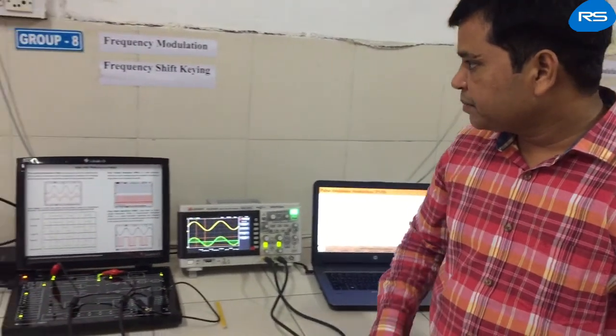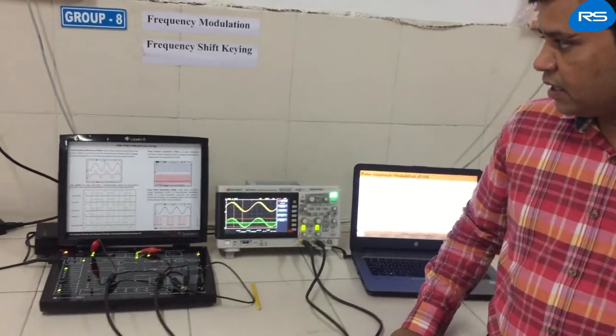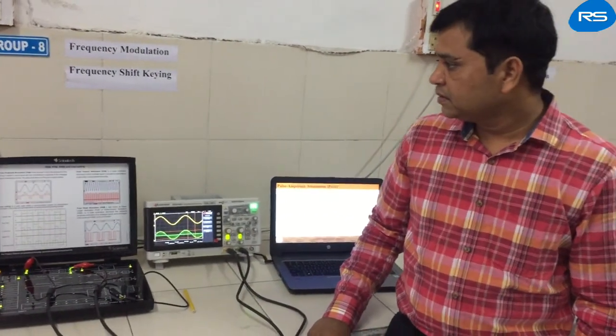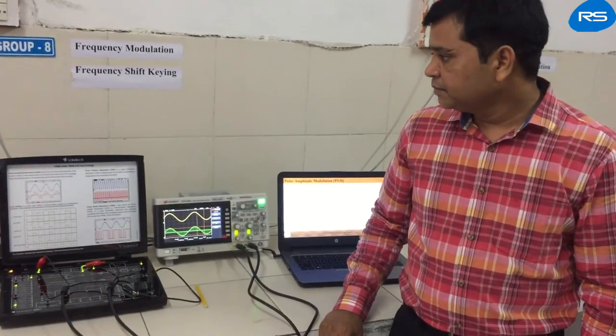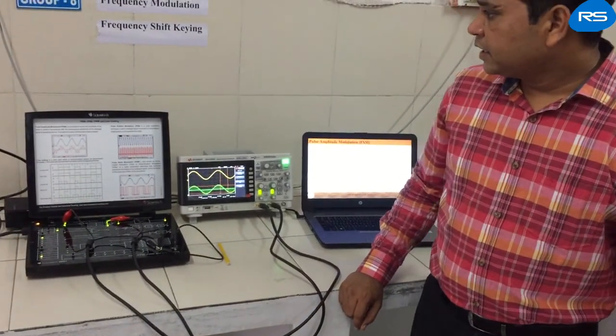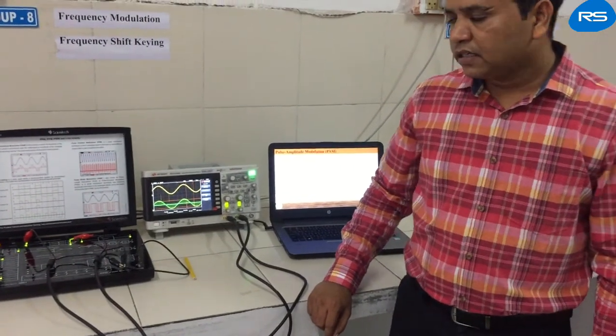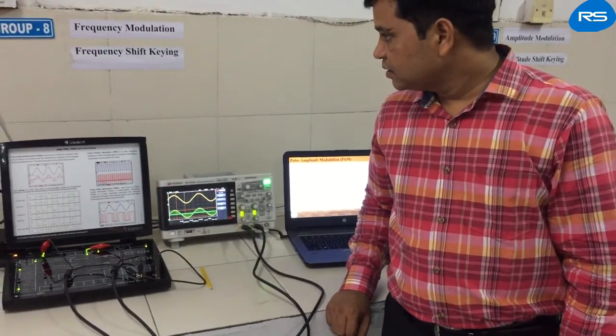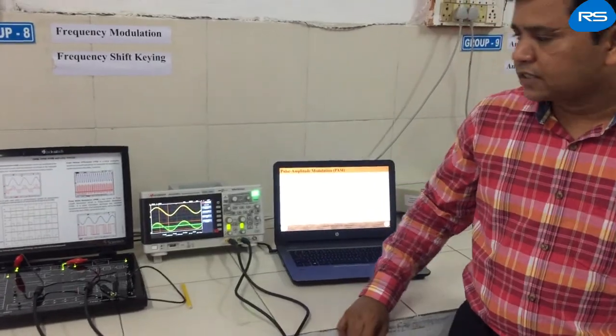Basically, Pulse Amplitude Modulation is the process in which the amplitude of the pulse is varied in accordance with the instantaneous amplitude of the message signal at sampling rate. The width and position of the pulse is kept constant.